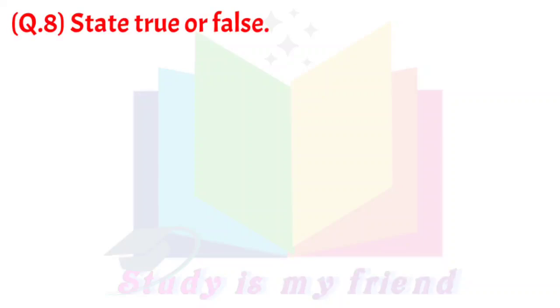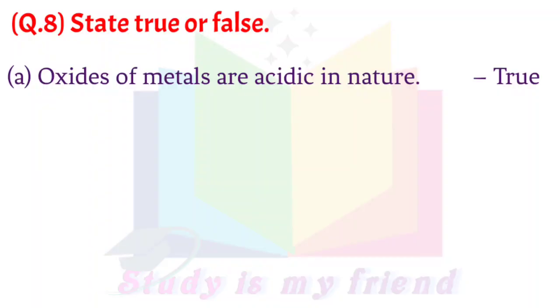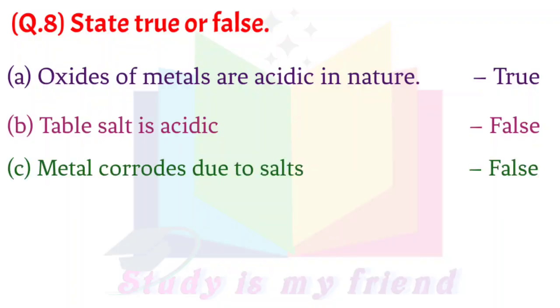Question 8: State true or false. A. Oxides of metals are acidic in nature - True. B. Table salt is acidic - False. C. Metal corrodes due to salts - False. D. Salts are neutral - True.